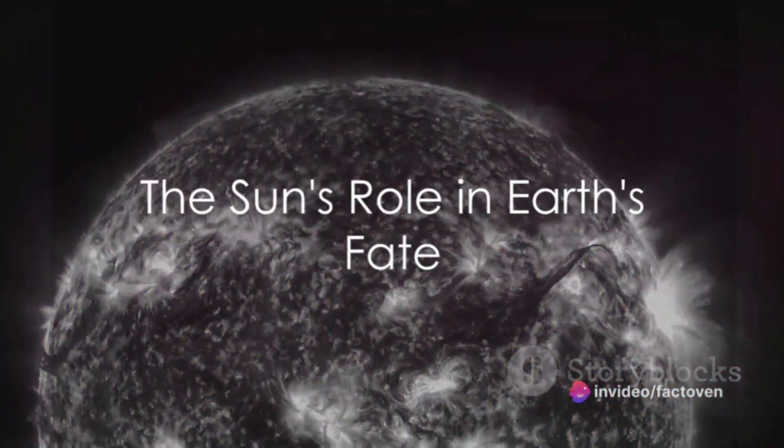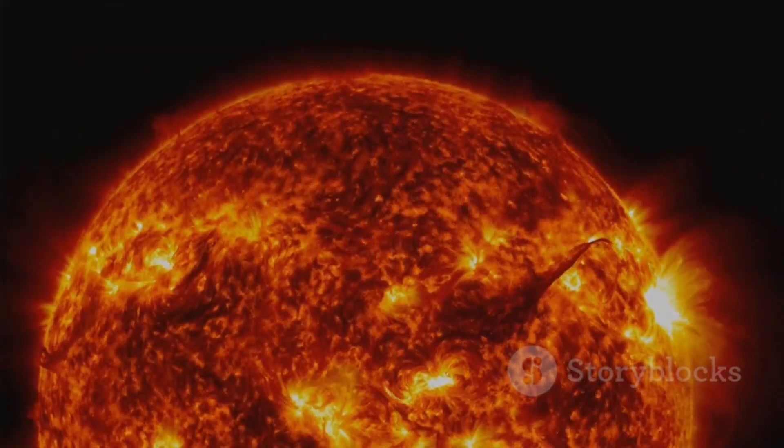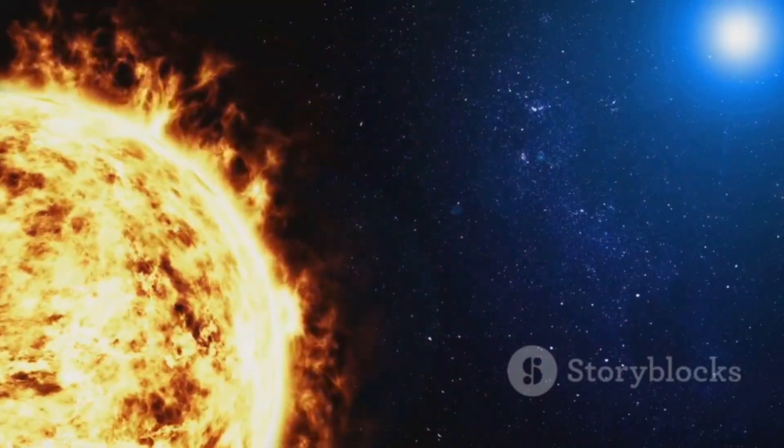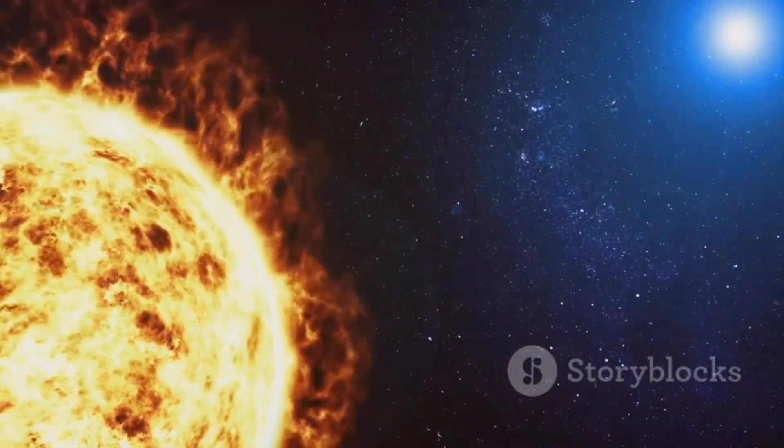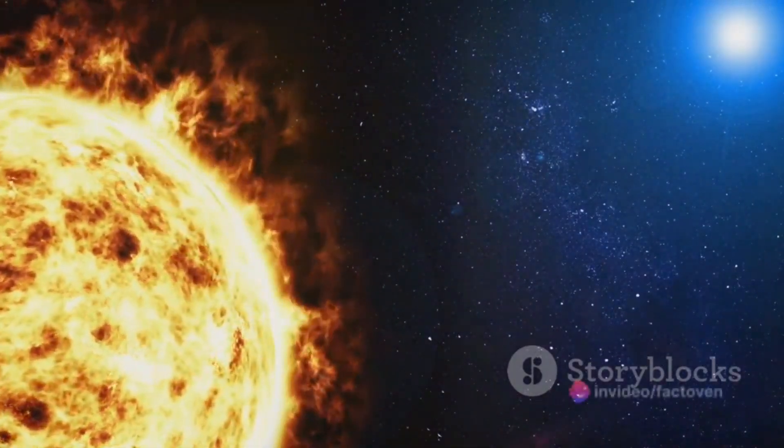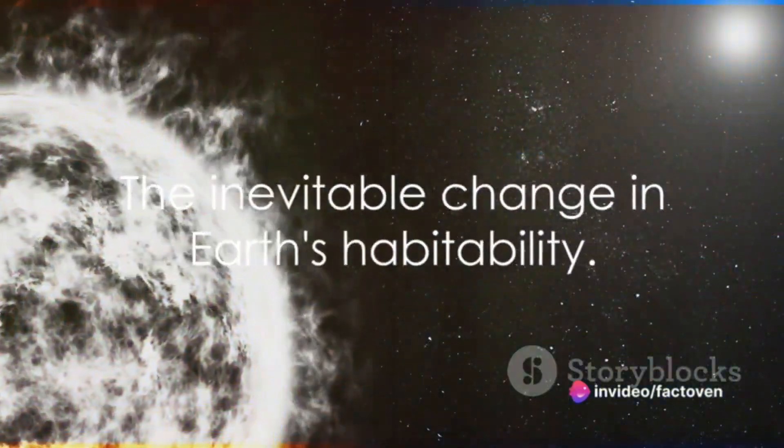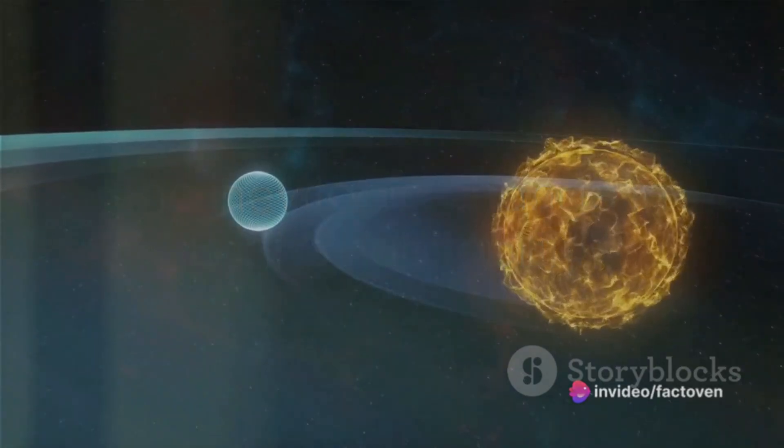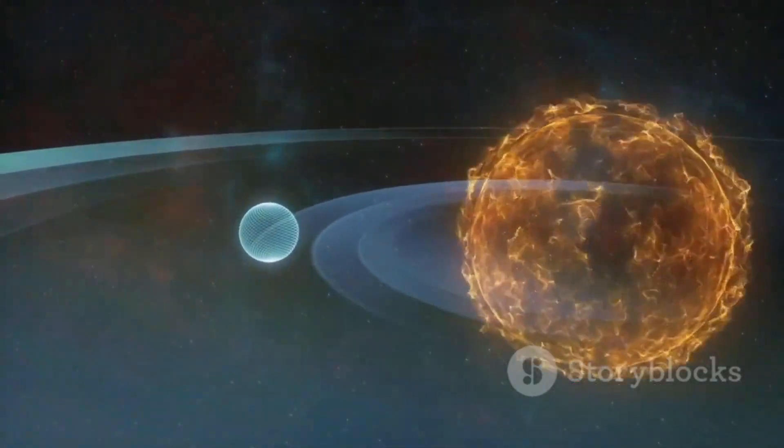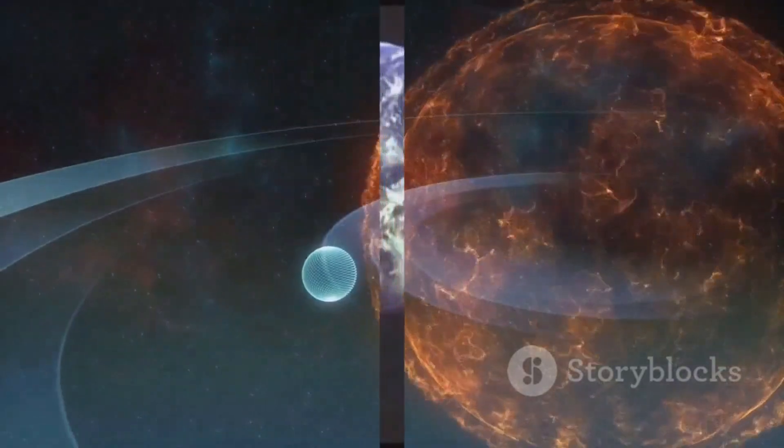And then, there's the Sun. The very source of life could also be the harbinger of its end. As the Sun ages in about 1 billion years, its increased activity will cause atmospheric oxygen levels to plummet. This will render Earth inhospitable to most forms of life, a stark reminder of the impermanence of Earth's habitability in the face of cosmic forces.